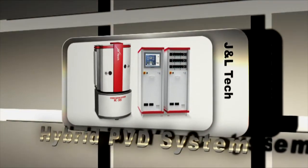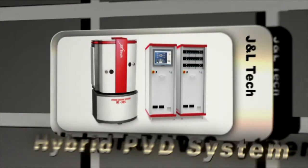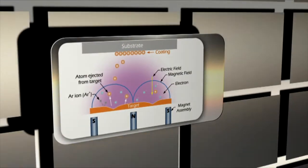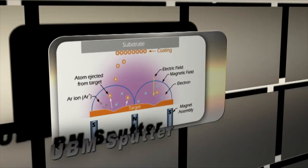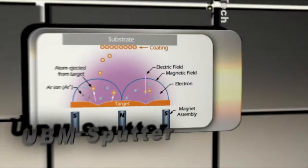The hybrid PVD system is an equipment for DLC coating which provides a superior coating by appropriately combining linear ion source, UVM spotter, and FCVA source.